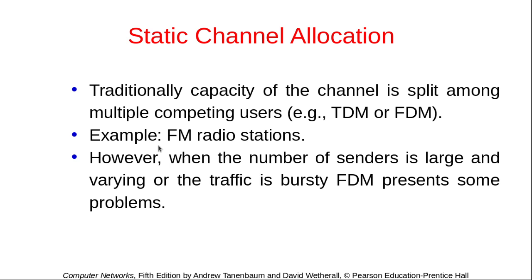For static channel allocation, it has been a practice to divide the channel capacity among the available users with the help of TDM or FDM — time division multiplexing or frequency division multiplexing. FDM is used for FM radio stations, for example. That was fine when the number of senders is limited, not changing, or the traffic is kind of constant. But when the number of senders grows or is changing rapidly, or the traffic is bursty, problems arise.